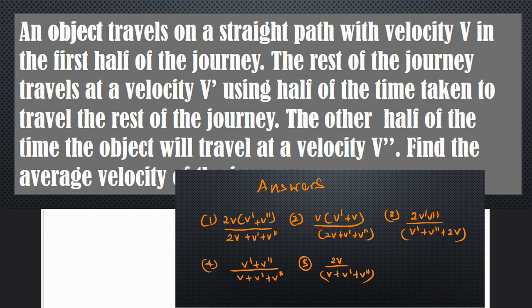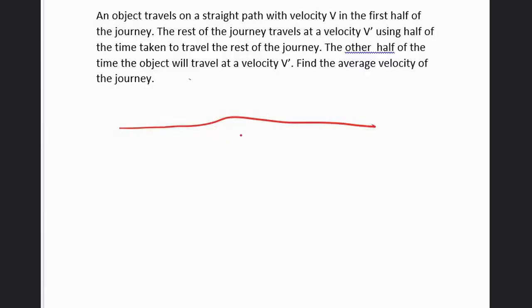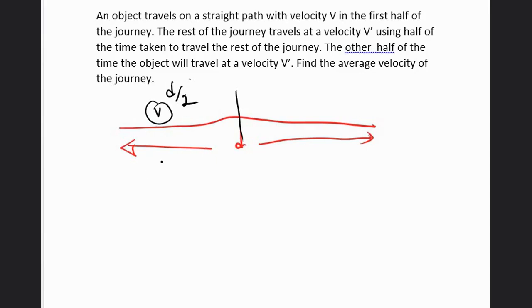Let's draw it first. Total length of the journey — let's take it as D. They are telling us the first half of the journey, D/2, they'll travel at a velocity V. So the time taken for that journey will be D over 2V.